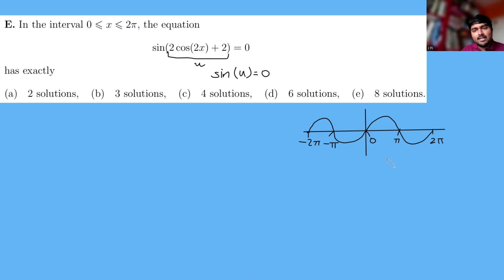So we quite easily learn from this that sine of u equals 0 if and only if u equals n pi, where n is just any integer, positive or negative. Great, so we know that u has to be a multiple of pi, so 2 cos 2x plus 2 must be some multiple of pi.